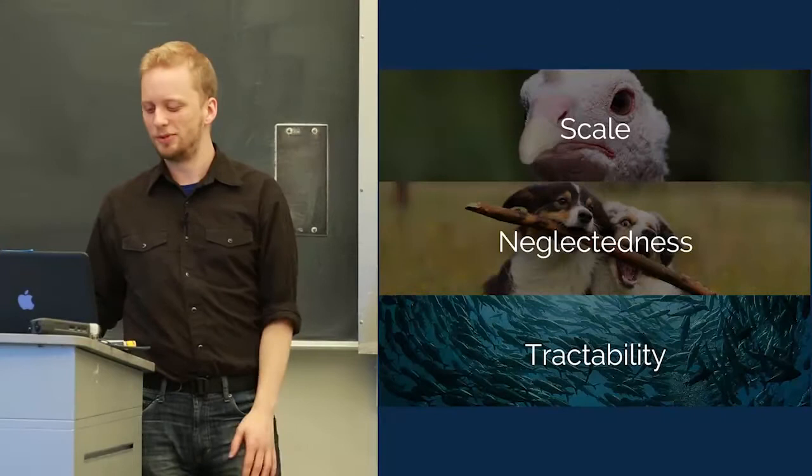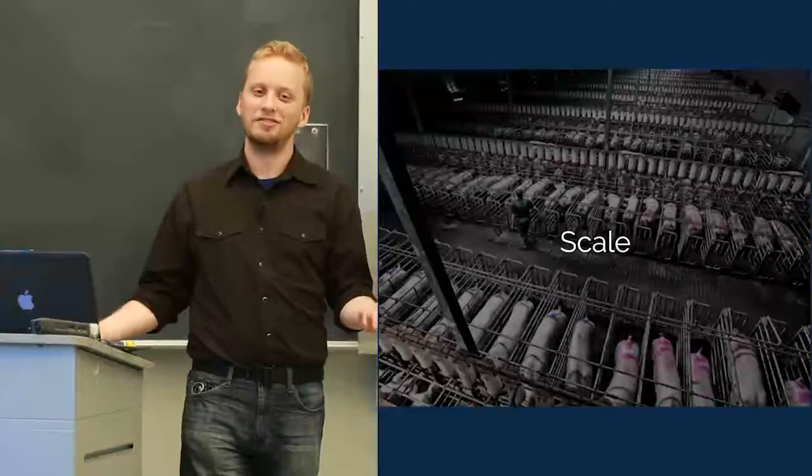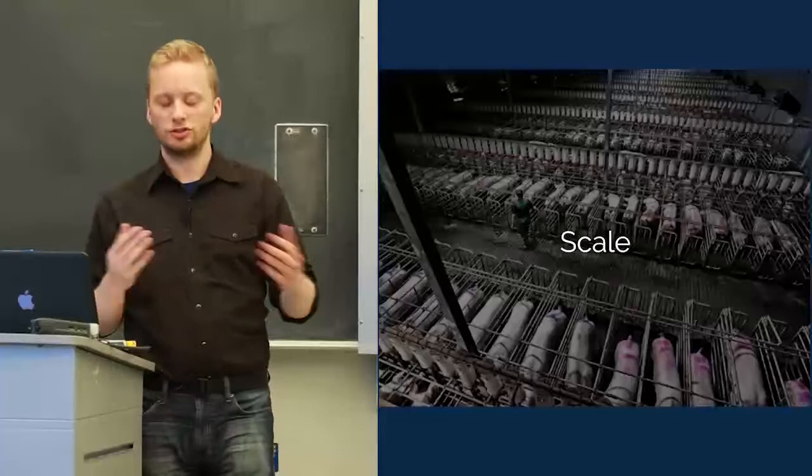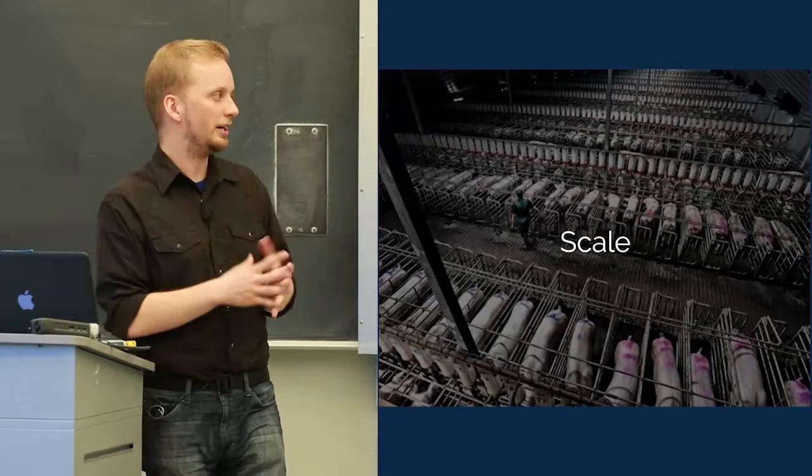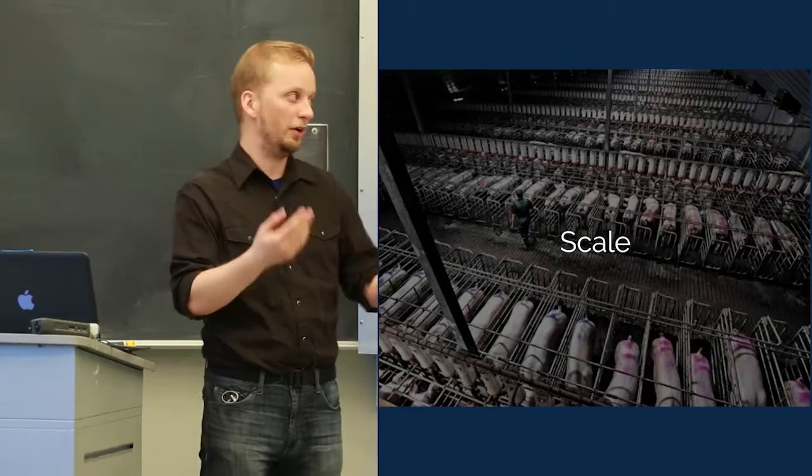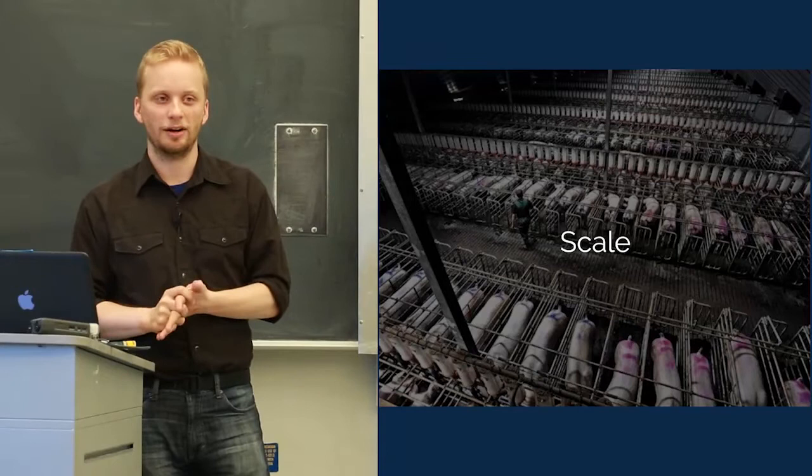To tackle that one first, the latest figures are like 77 billion land-dwelling farmed animals raised and slaughtered every year globally. It's just huge numbers, like 11 for every human on Earth. They're not treated very well at all. This is an example of gestation crates, which are tiny enclosures for pregnant pigs, so small that they can't even turn around, can barely move forward and back a little.